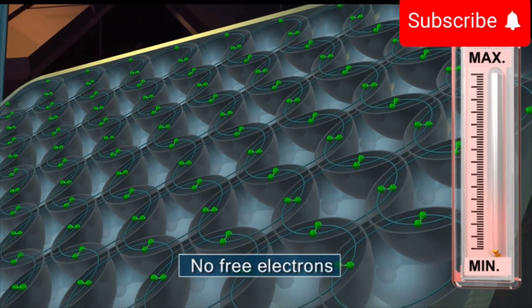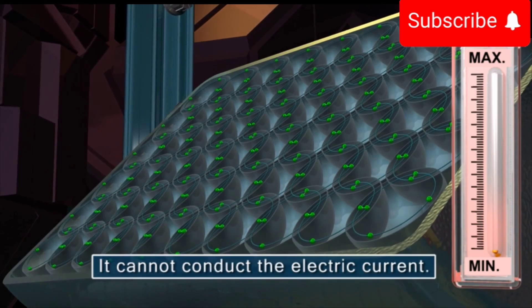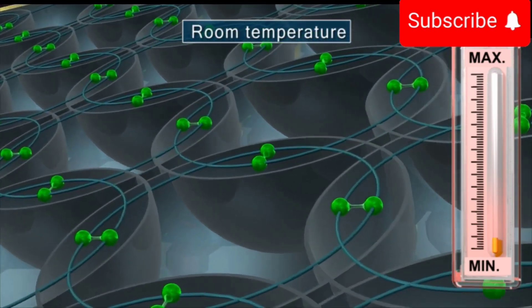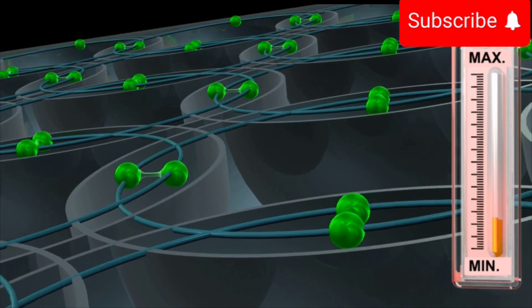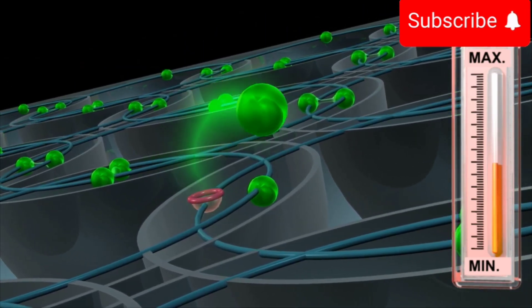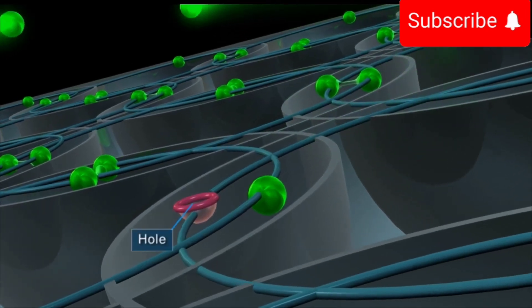However, at room temperature, the atoms in the semiconductor absorb thermal energy and the covalent bonds of a few atoms rupture, giving rise to free electrons. The escaping electrons leave vacant space known as holes.